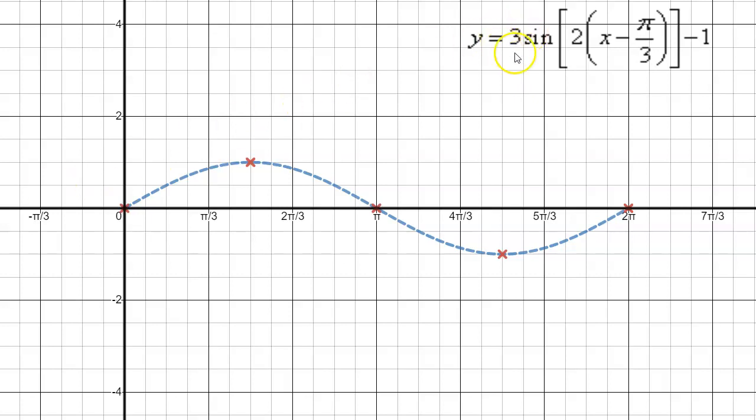The a value of 3 indicates that we should vertically stretch the sine curve about the x-axis by a factor of 3. Or another way of thinking about it is that we need to take the y-coordinates of each of these key points and multiply them by 3. So let's see what this would look like.